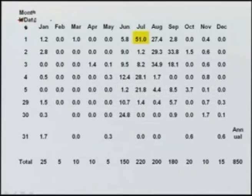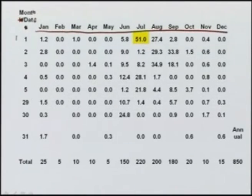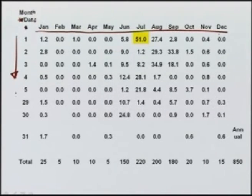Today we will take up some examples to clarify some of these points. Let us take an example where we have a non-recording rain gauge at a location and look at what kind of record it will have. This data shows month and date — date 1, 2, 3, 4, 5 up to 31, and similarly the month going from January to December. For every day, we have the corresponding precipitation in millimeters.